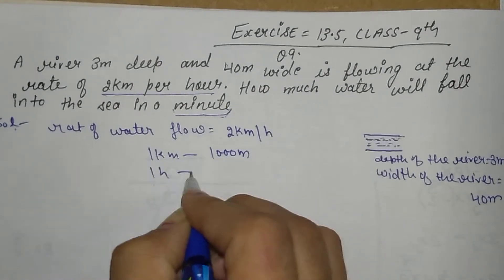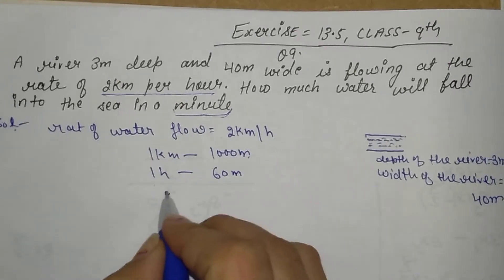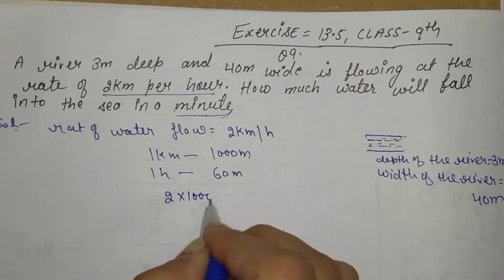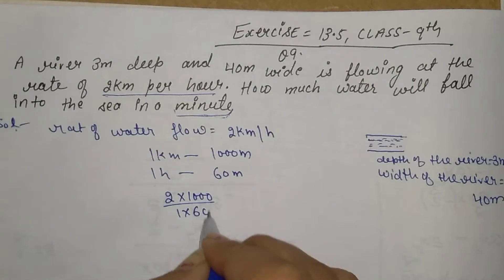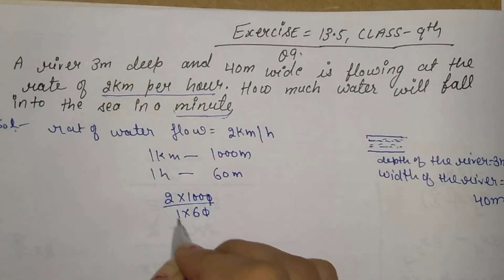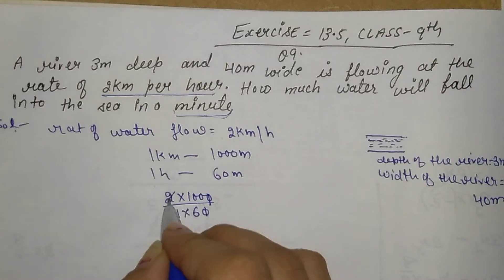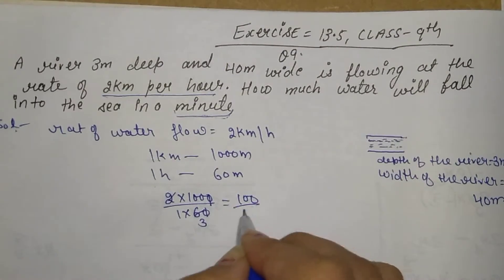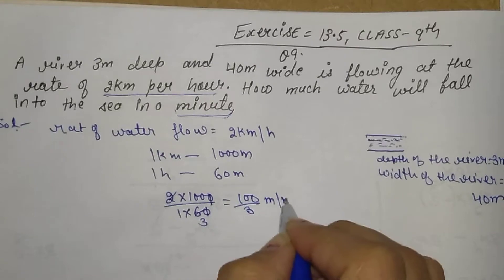Since 1 hour is equal to 60 minutes, we convert: 2 into 1000 upon 1 into 60. Simplifying, that gives us 100 by 3 meters per minute.